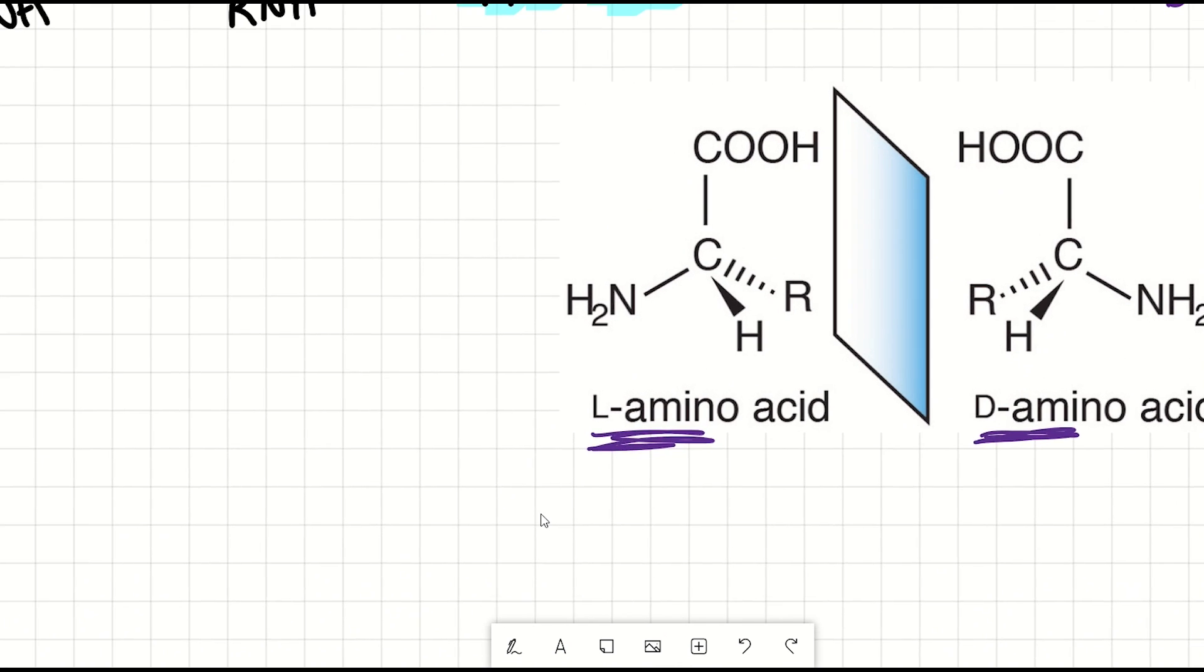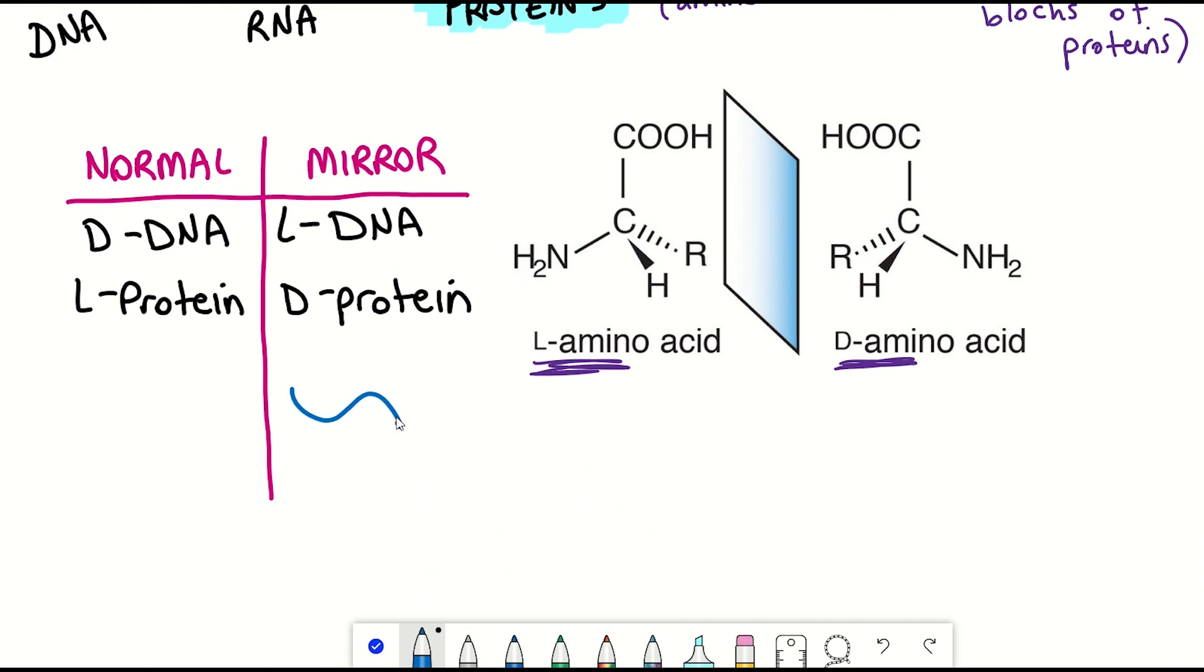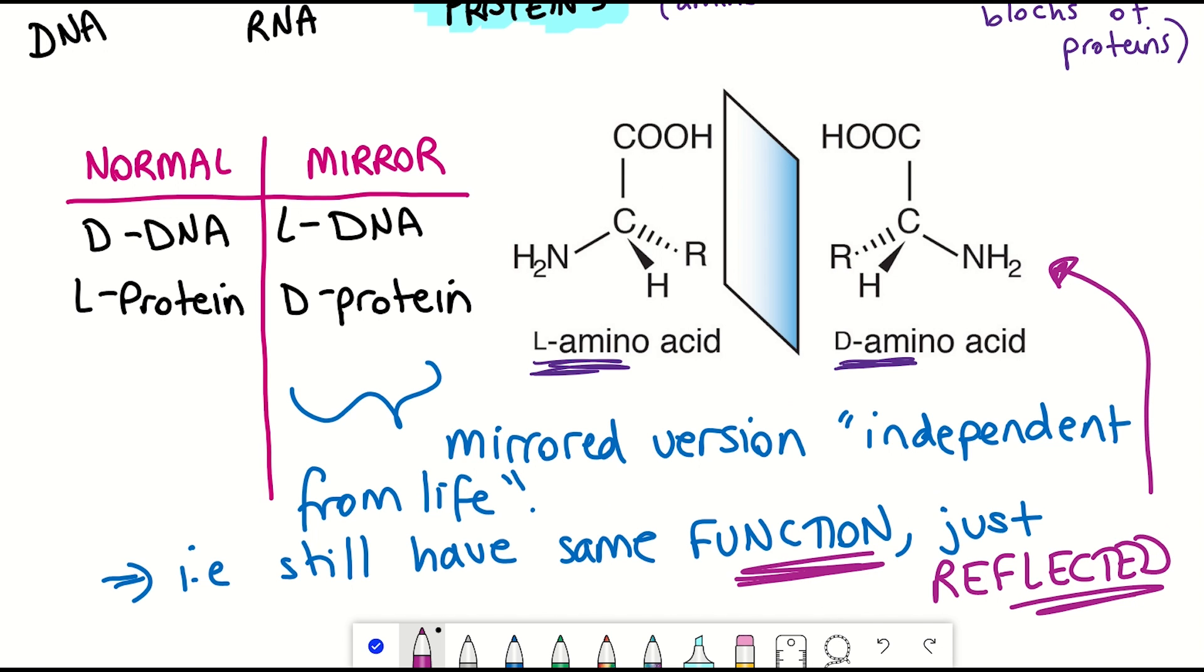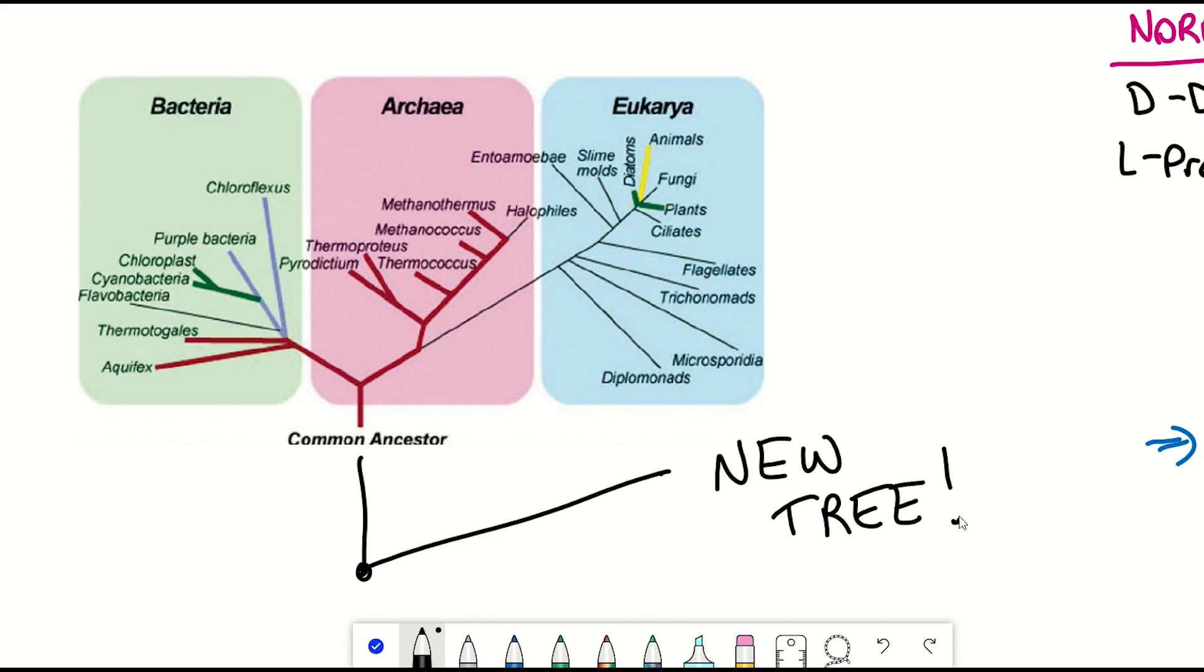Now the thing is, it could have quite easily been the other way around. We could have L-DNA and D-proteins. As these mirror image systems are independent from life, as far as we know, they would still perform the same function, just be a reflected version of it. And so it wouldn't just be another branch on the tree of life. It would be a completely new tree.